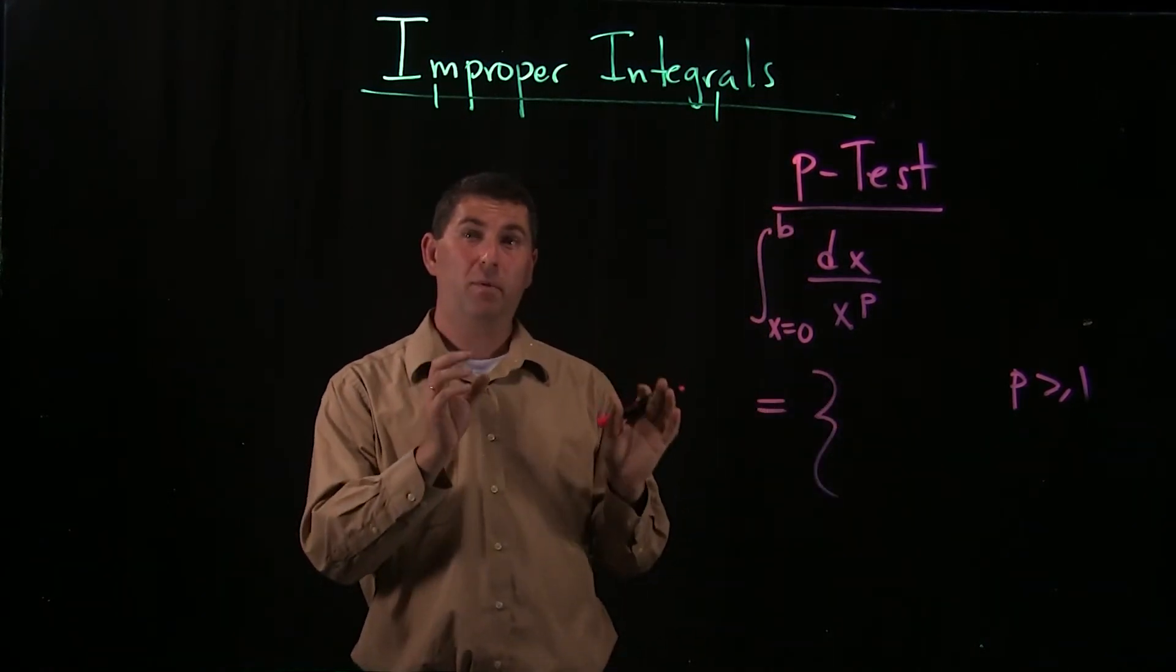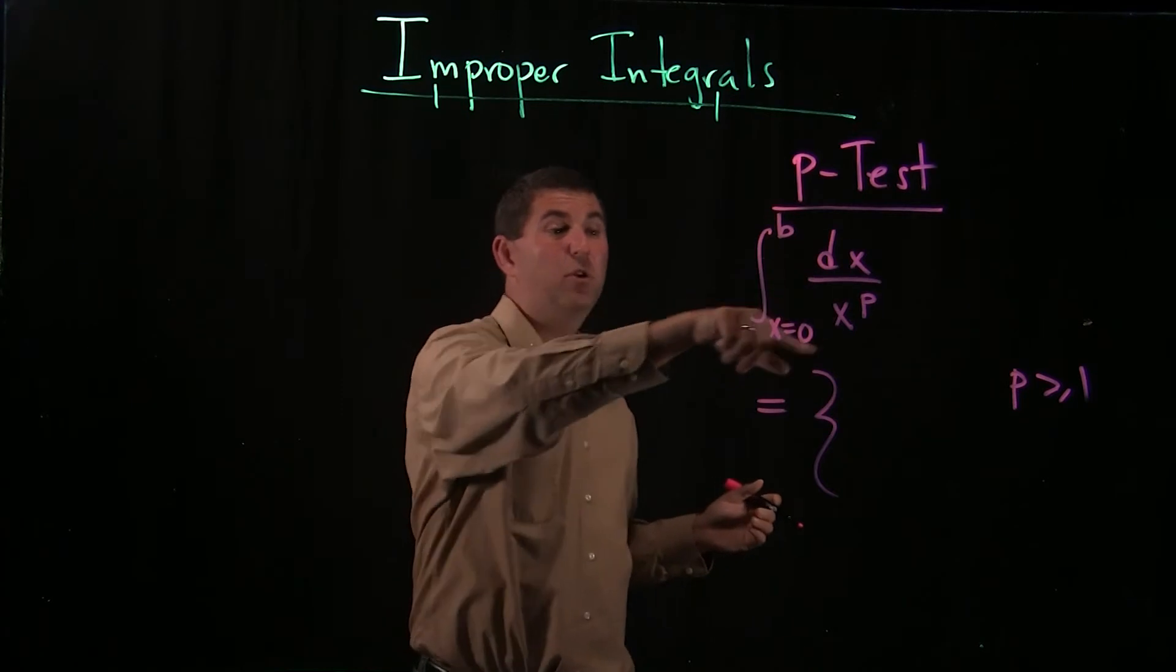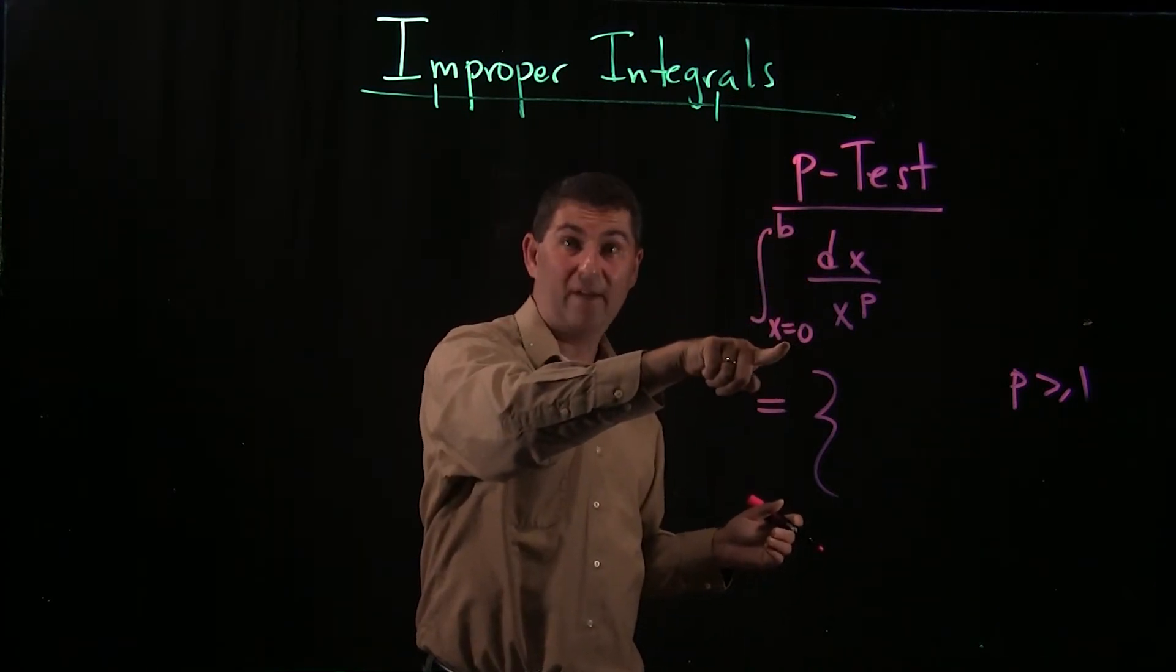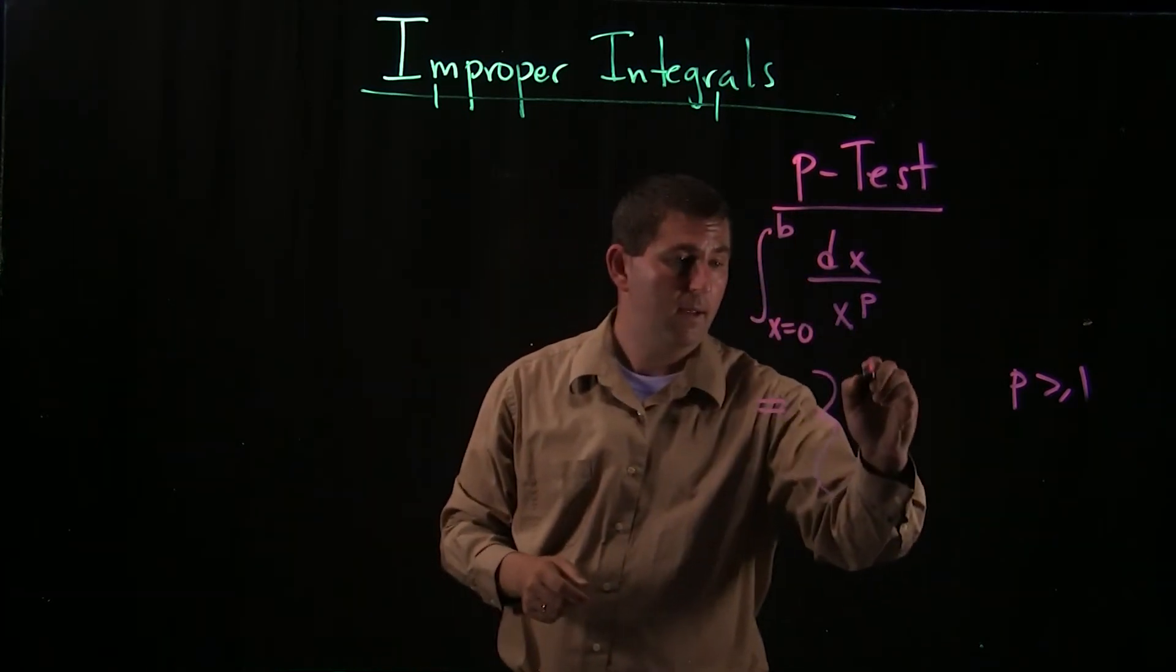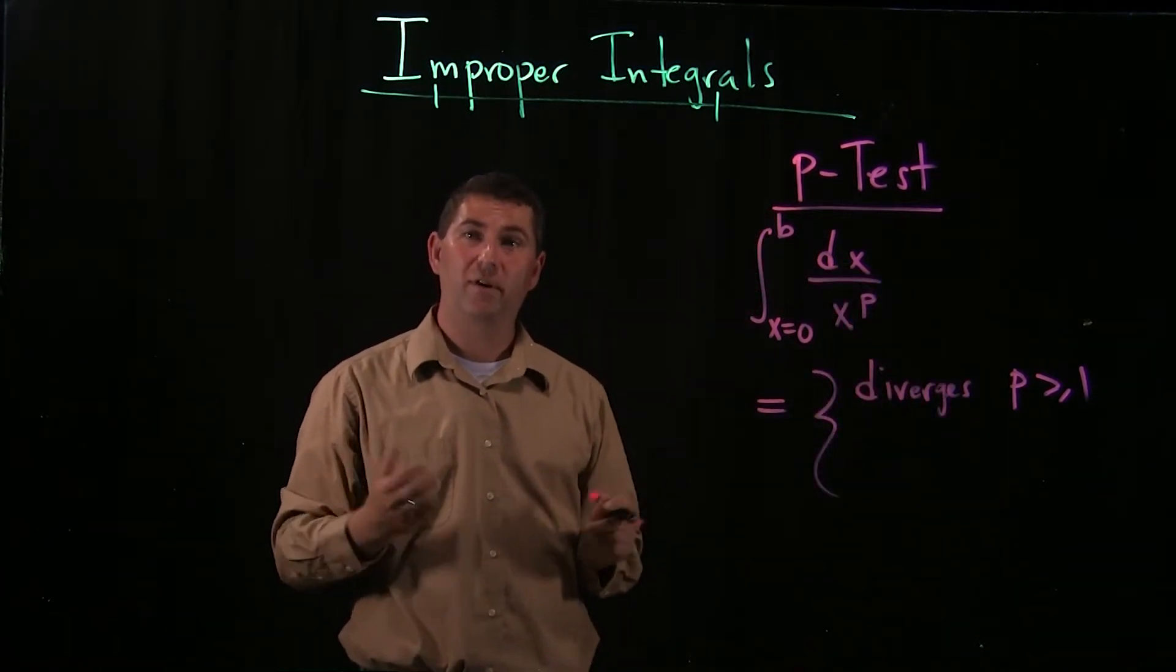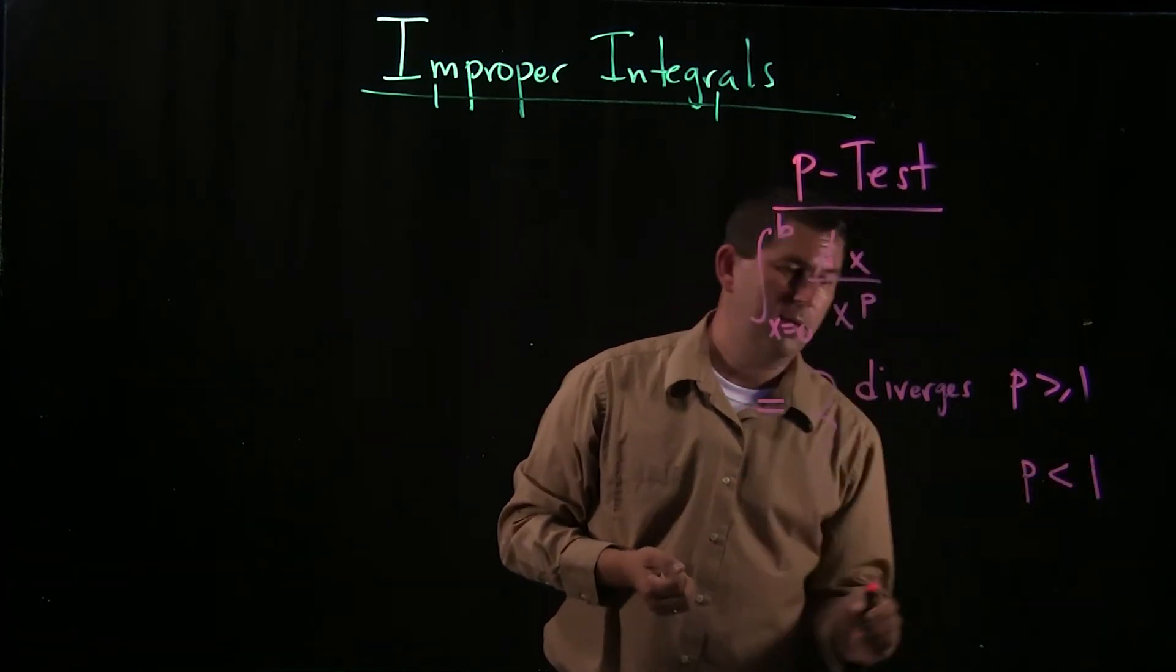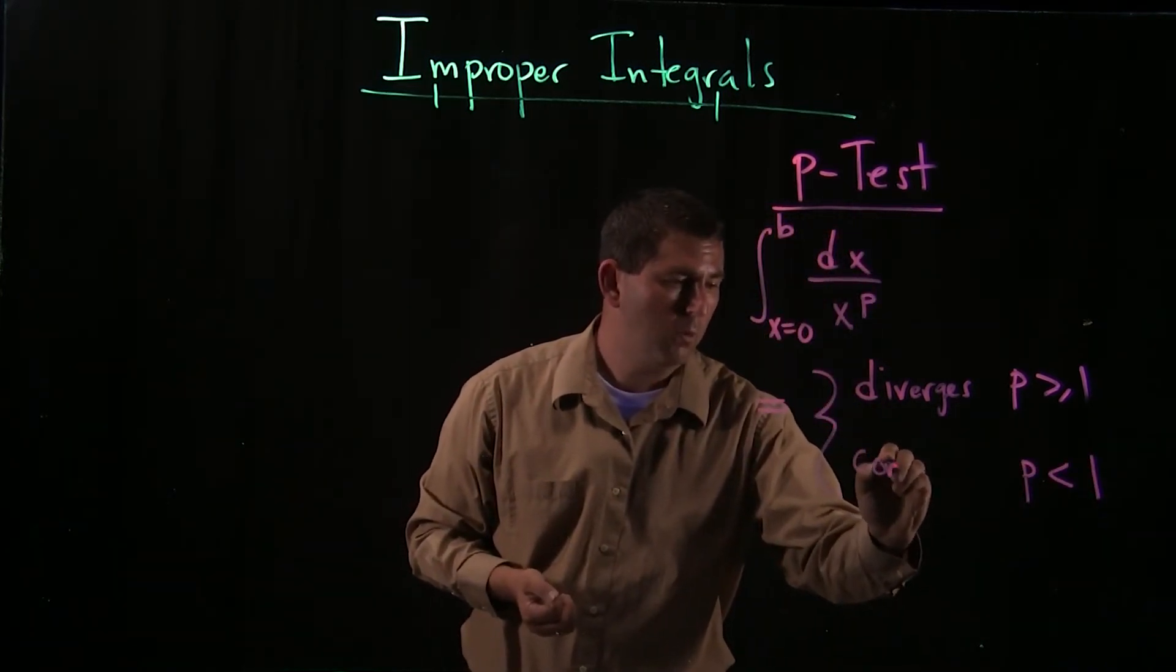So the question is, is this going to converge or diverge? And the answer again is going to depend on p. And it's basically sort of the opposite answer. If p is at least 1, before we saw if p was greater than 1 then it would converge. Well, when we're looking at a discontinuous integrand and we have a discontinuity at 0, if p is too big, now this function is going to diverge. And if p is less than 1, then the integral will converge.